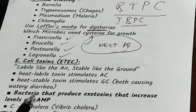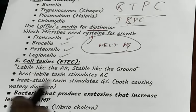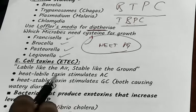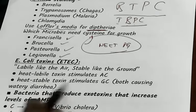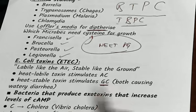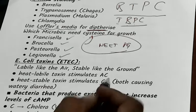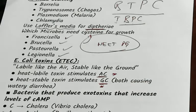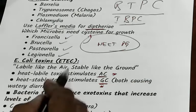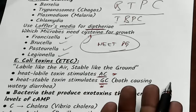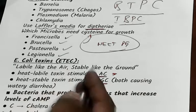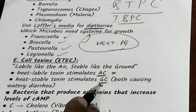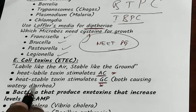Now, looking at E. coli toxins — you have a heat-labile toxin and a heat-stable toxin. Heat-labile stimulates the adenylate cyclase. Heat-stable stimulates the guanylate cyclase. To remember: labile is like the air — above; stable is like the ground — ground high, guanylate cyclase. Stable is the heat-stable toxin.